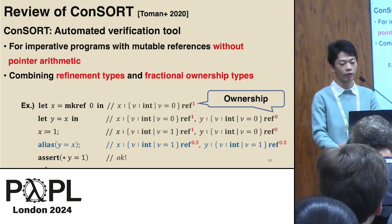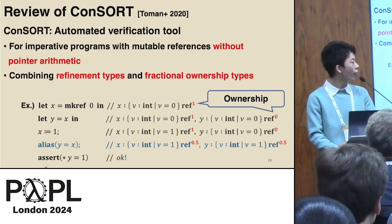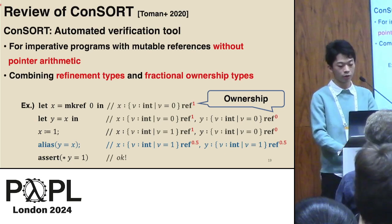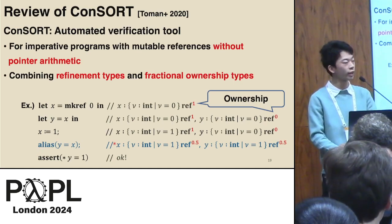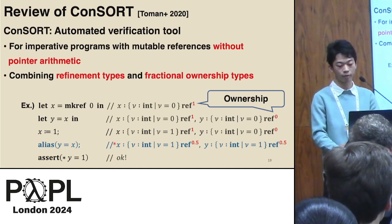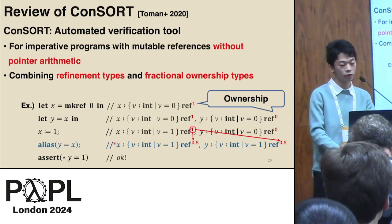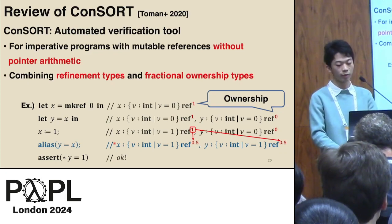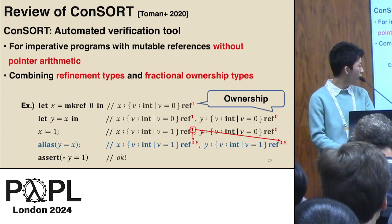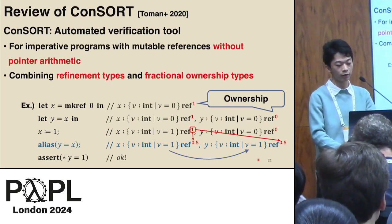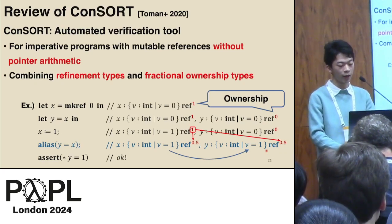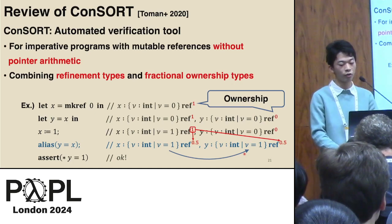This is a slight variation of the previous example, where the value of y is now asserted to be 1, and alias information tells the type system a hint that y is an alias of x. Thanks to the alias information, the type system of consort can distribute a part of the ownership of x to y. 1 is divided to 0.5 and 0.5, and propagates refinement type information to y. Now, since we have information that the value of y is 1, we can conclude that the assertion on the last line will succeed.